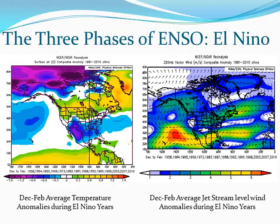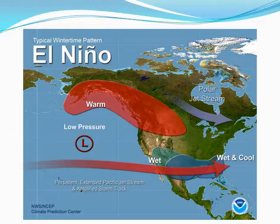The diagram on the right side of the slide shows jet stream level wind anomalies during these same El Niño years. Note the area of enhanced jet stream level associated with the subtropical jet, which extends from near Hawaii across northern Mexico and the southern U.S. There is also a strong upper level low pressure system noted in the Gulf of Alaska, putting the Pacific Northwest in a general southwesterly yet split flow. This diagram shows the typical wintertime pattern during El Niño years, with a persistent enhanced subtropical Pacific jet across the southern portion of the U.S. and the polar jet stream deflected further northeast across Canada and northern New England.